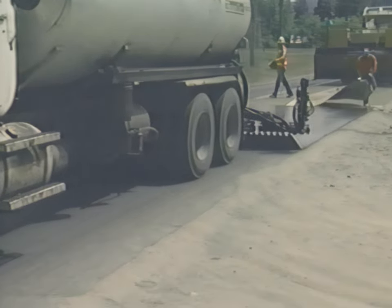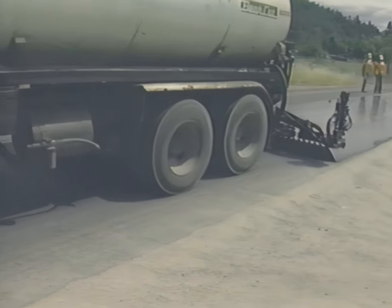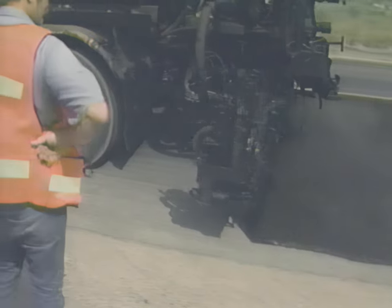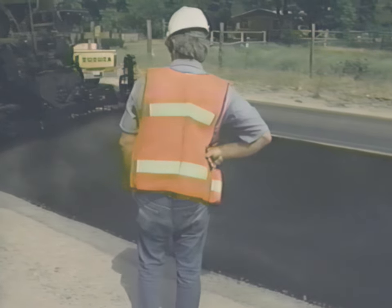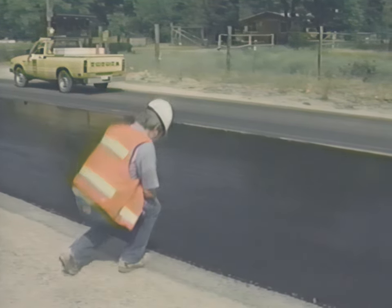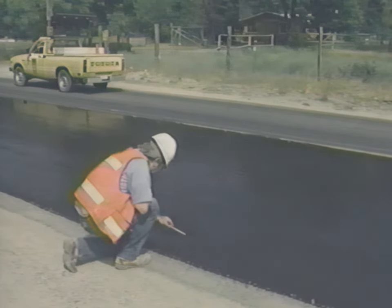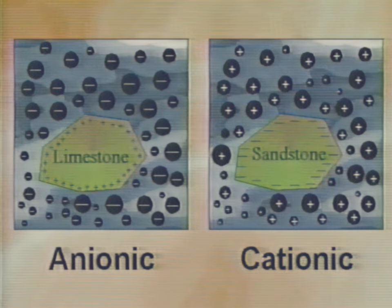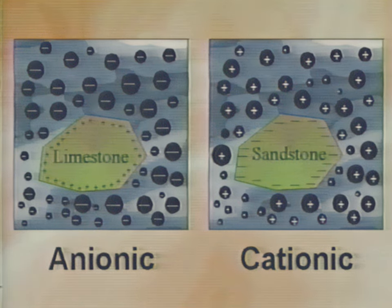Emulsions contain both liquid asphalt and water. After application, the water evaporates and leaves only the liquid asphalt on the surface. This is called breaking. You can actually see this happening — the emulsion turning from brown to black as the water evaporates. There are two types of emulsions, anionic and cationic, with different electrical charges. The type used has to be compatible with the chips used, and this compatibility must be verified in advance.